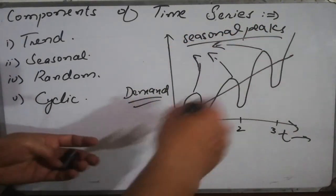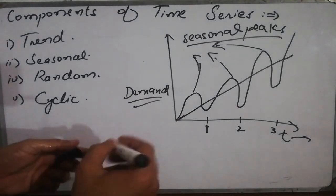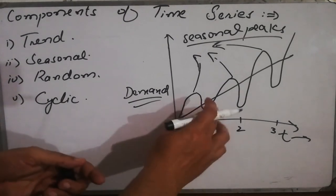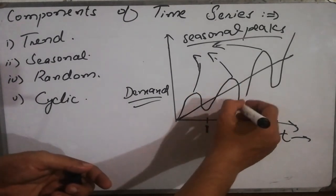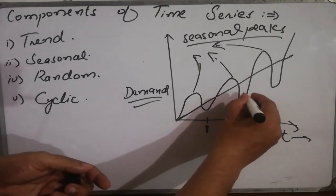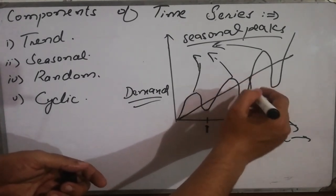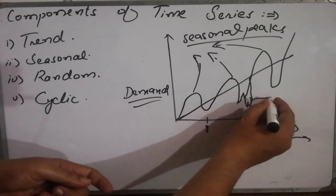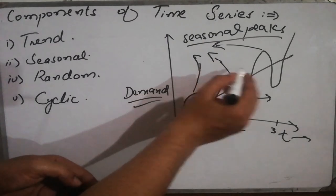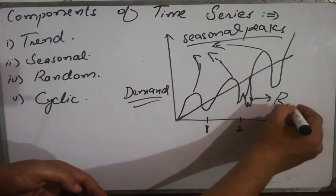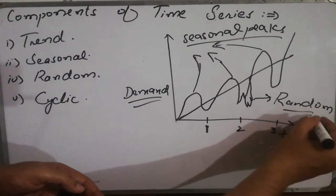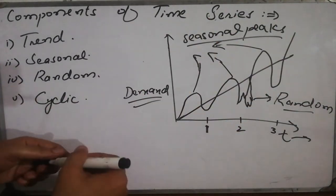And then let's suppose we are having a certain random variation over here. That means that it was supposed to get lower but rather it gets something like this. So this is something that we could not predict in our calculations or anything, and that's why they are called as the random variation.